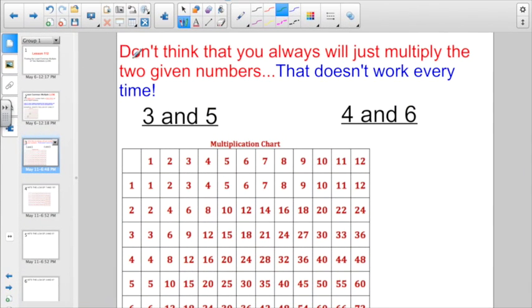But, don't make the mistake I did when I first learned about least common multiples. Don't think that you'll always just end up multiplying the two given numbers. That doesn't work every time. I think the only time in my life I ever had a math redo was when I tried taking a shortcut, and I just multiplied the two numbers. Yeah, 3 times 5 is 15. That is the least common multiple. But I assure you, the least common multiple of 4 and 6 is not, and I repeat, it is not 24.